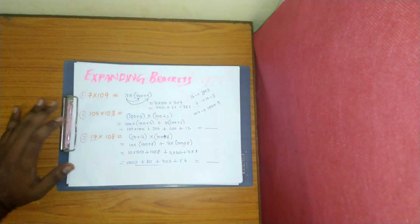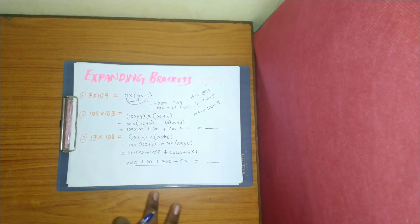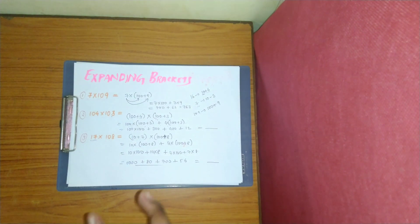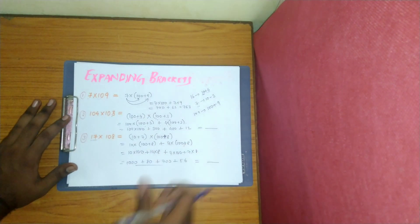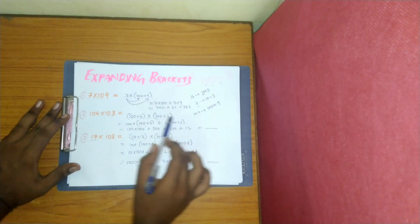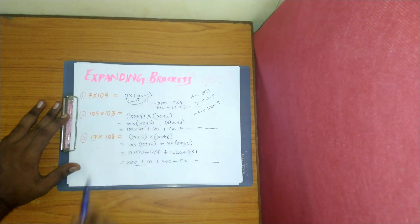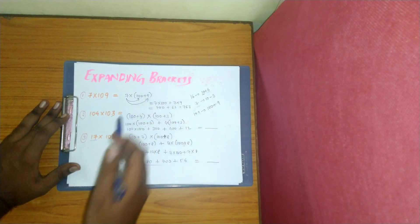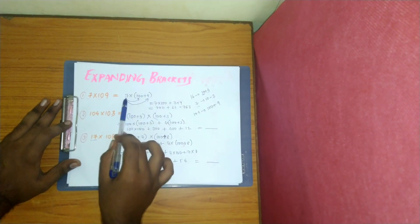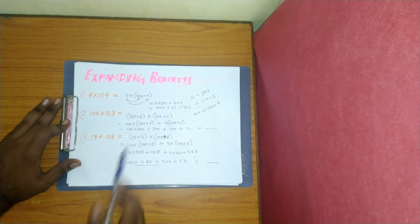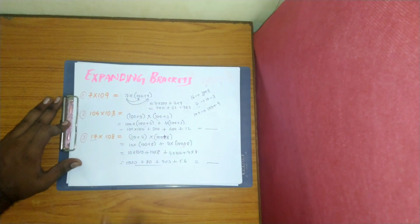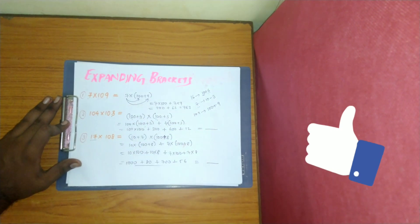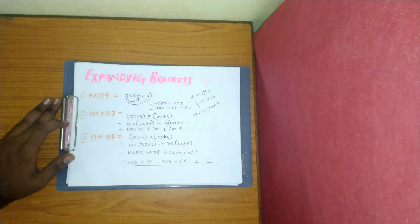So this is how to expand brackets. First, you rewrite a number in an addition form — some simpler or rewritten form — so that then you can directly multiply it by opening the bracket. We are expanding the bracket. This is the expansion form, and this is how we expand the bracket.